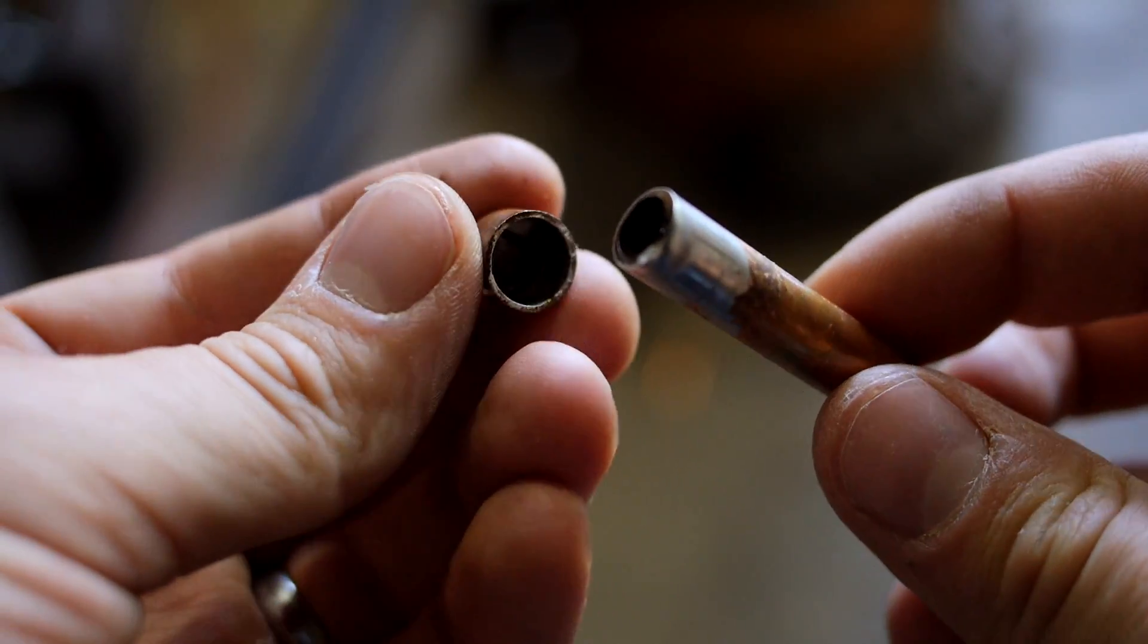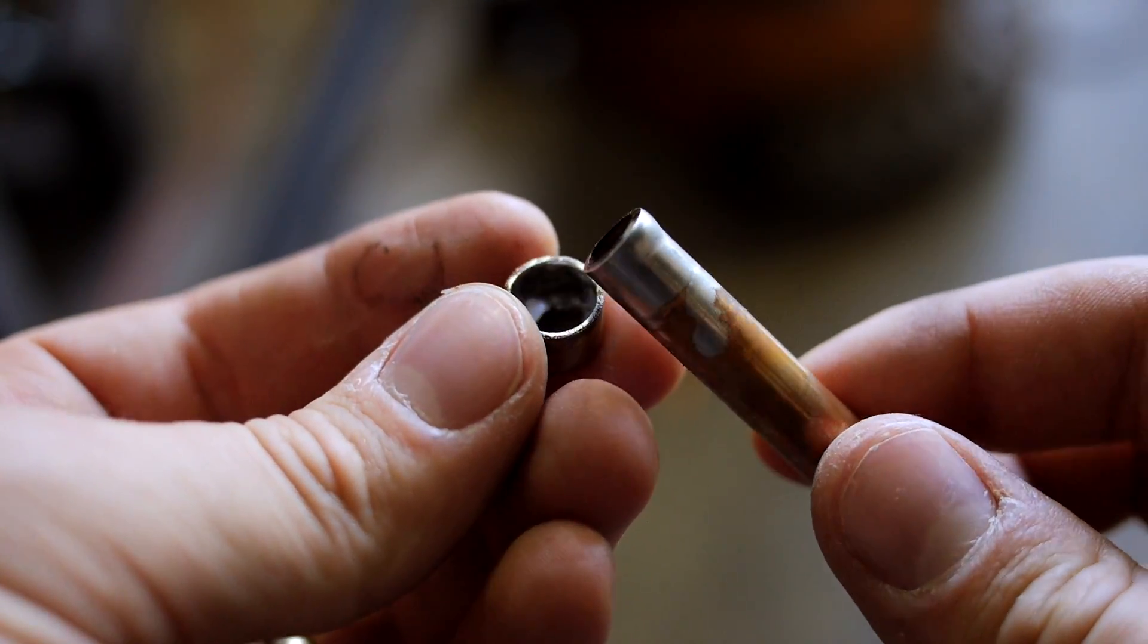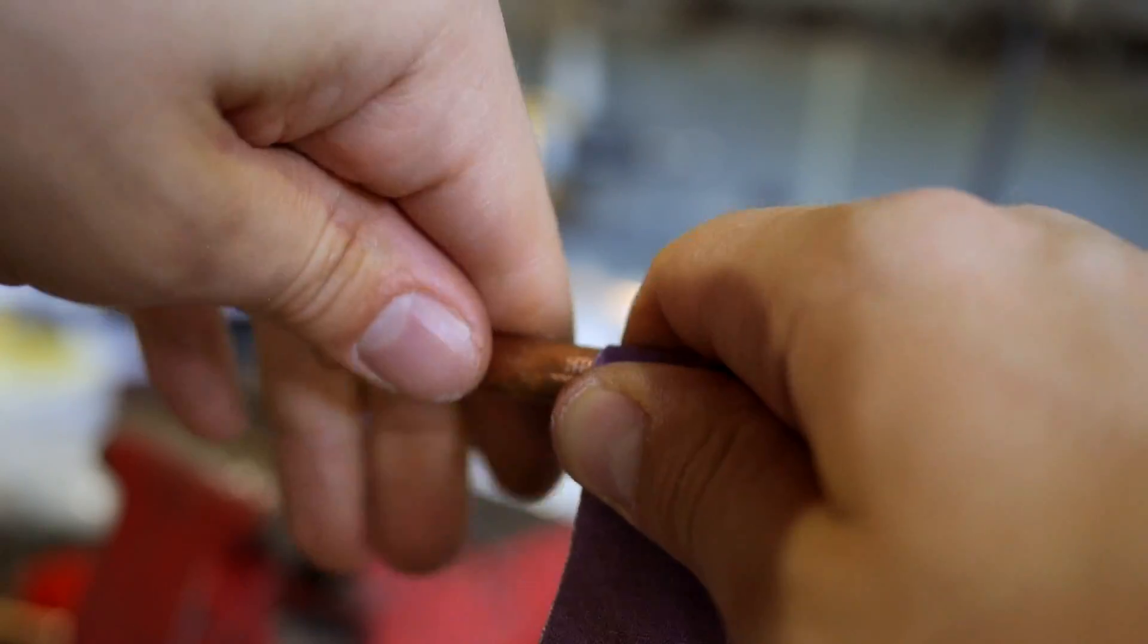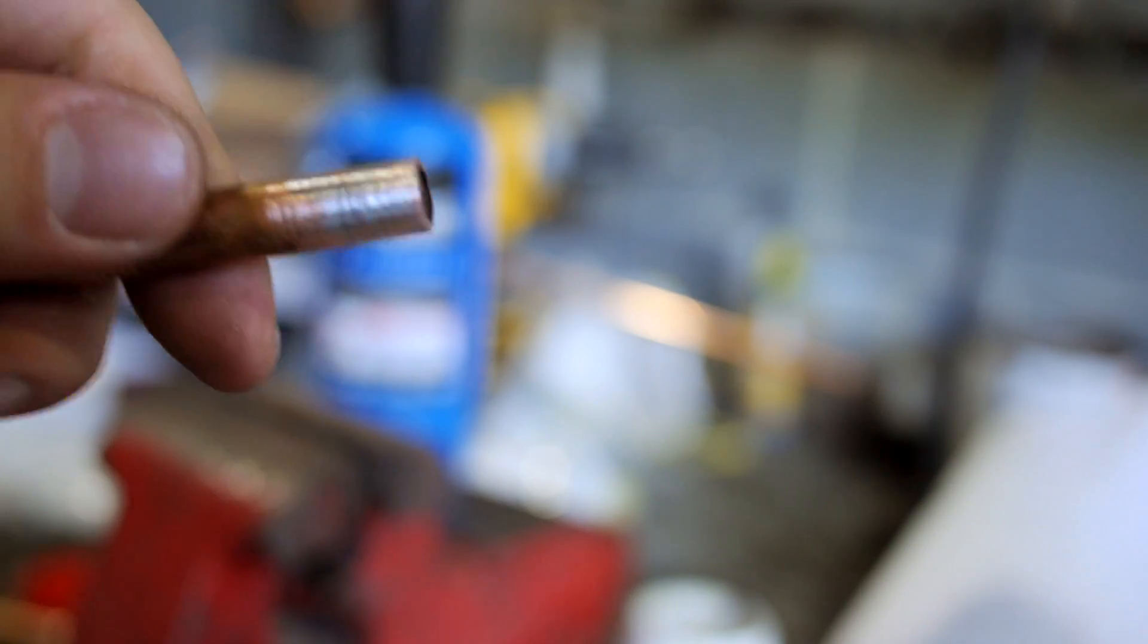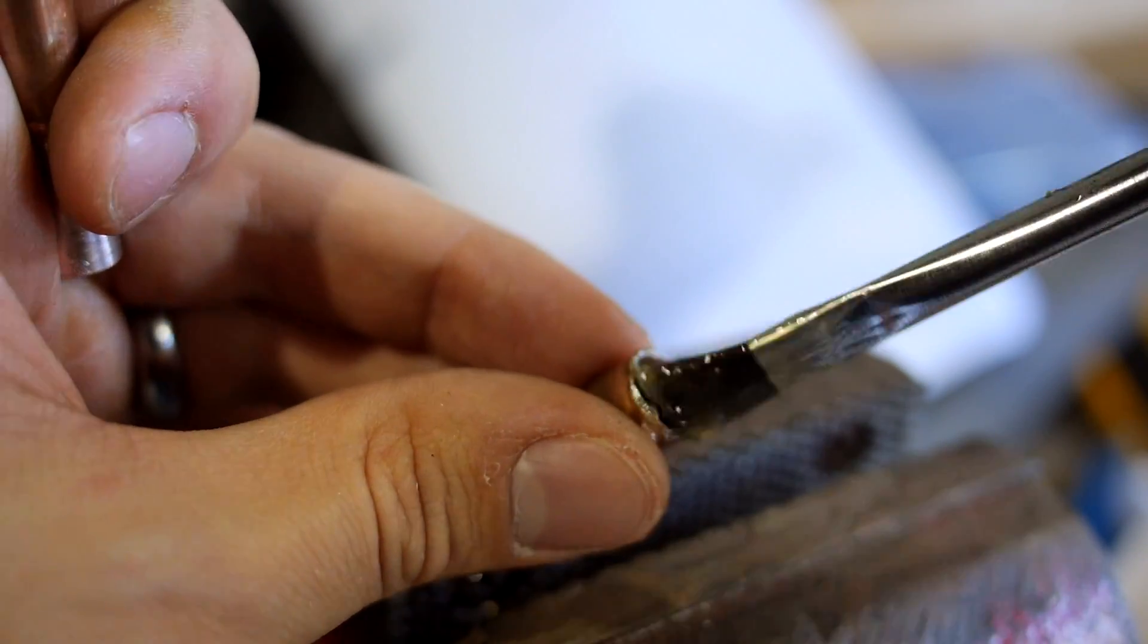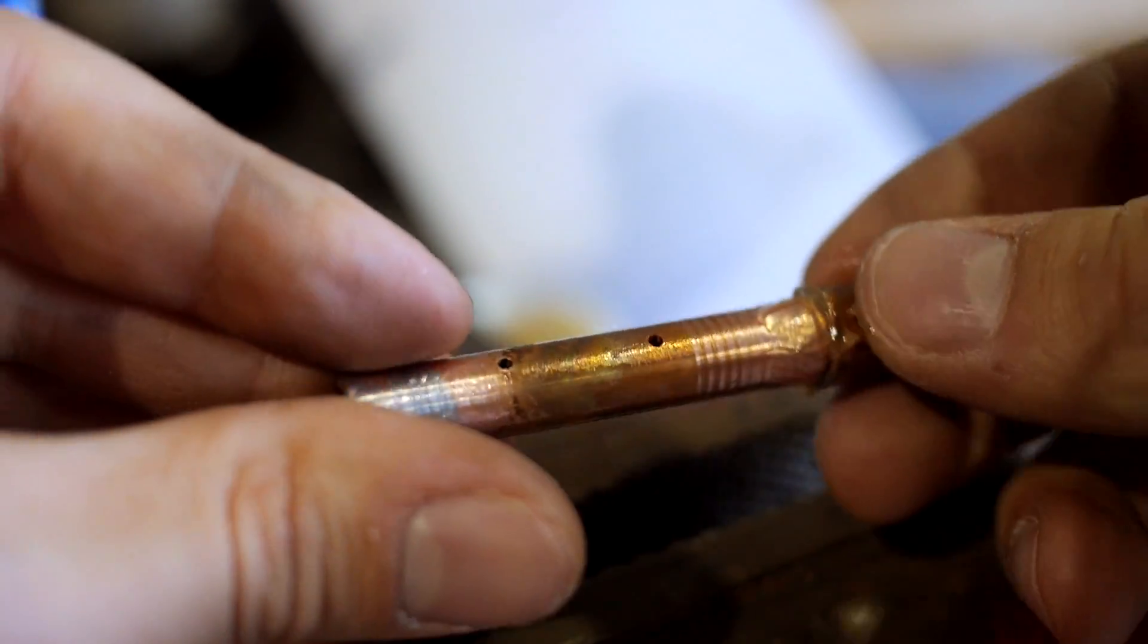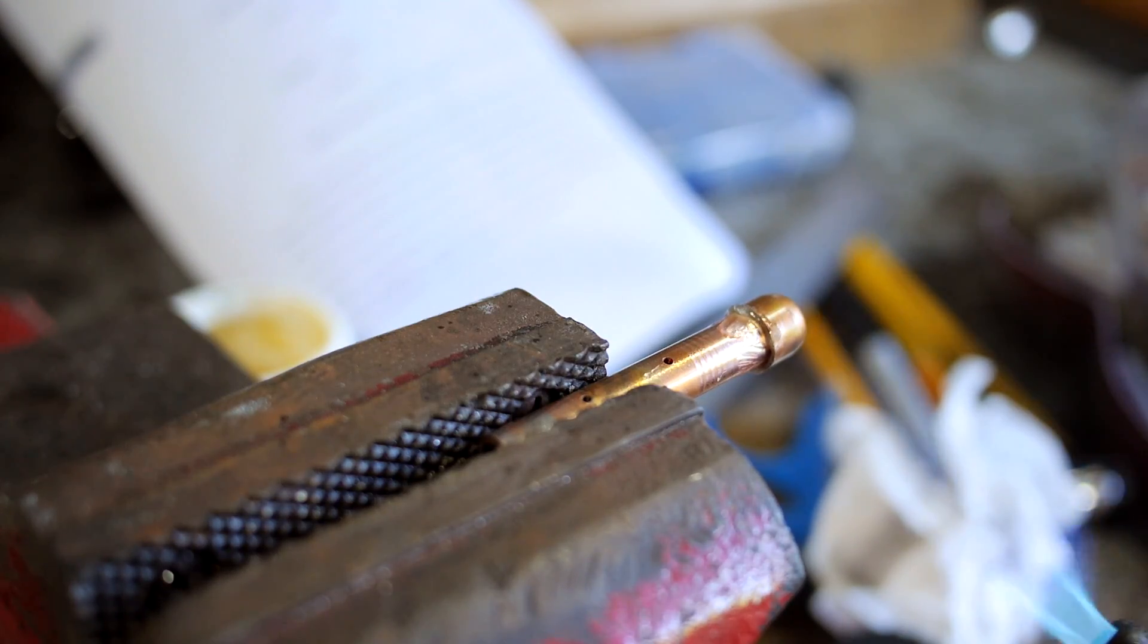If you do make a mistake, you can unsolder the parts and pull them apart with pliers. Reapplying them can be tricky, but if you sand both parts so that they easily fit together again, you can reflux them, reassemble them, and then go ahead and re-solder that connection.